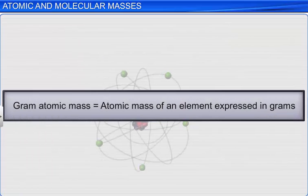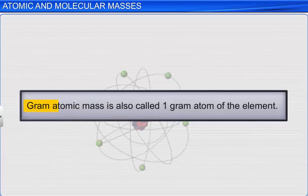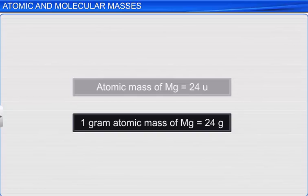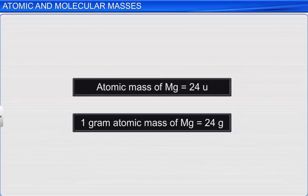When the atomic mass of an element is expressed in grams, it is called gram-atomic mass. Gram-atomic mass is also called one gram-atom of the element. For example, one gram-atom of magnesium is equal to its atomic mass expressed in grams, which is 24 grams.